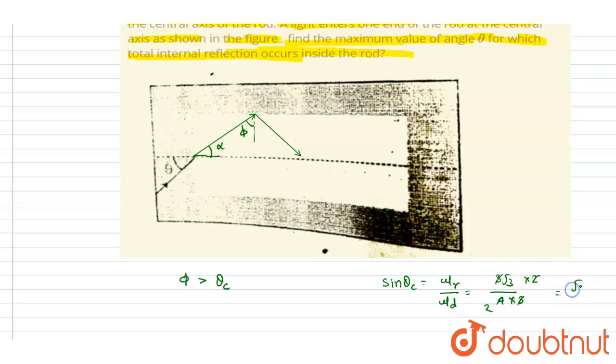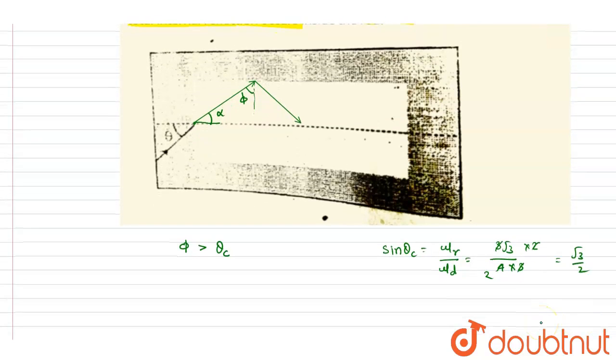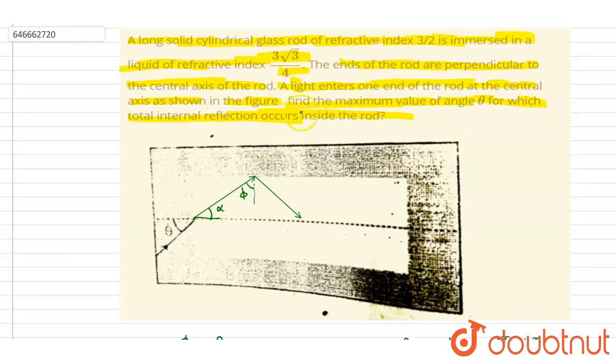So this is the condition. So if you see here, we want the value of maximum value of θ. So let's maximize the θ first, then we will put the limit on that.